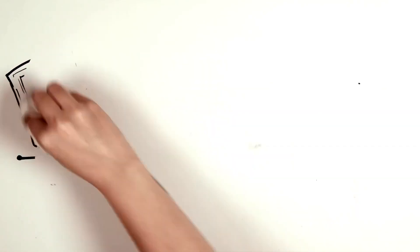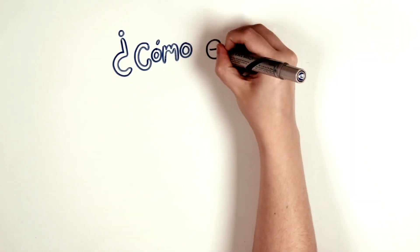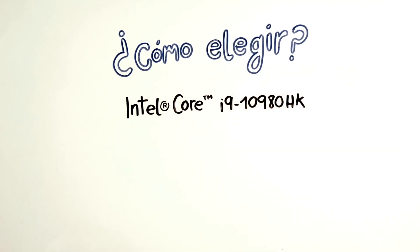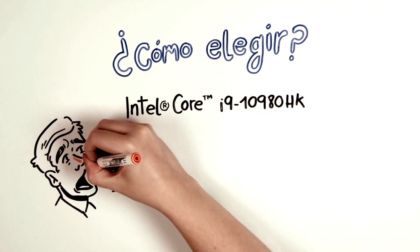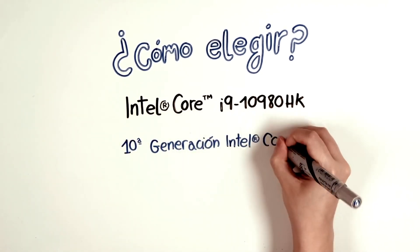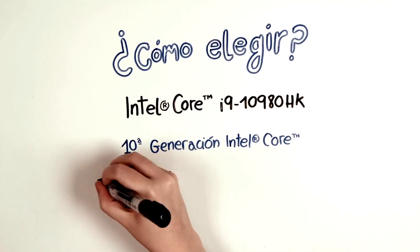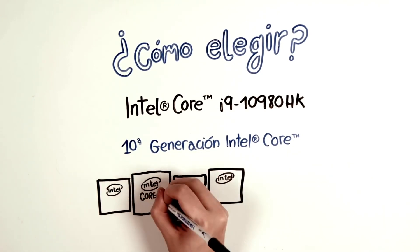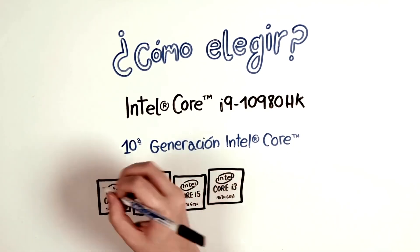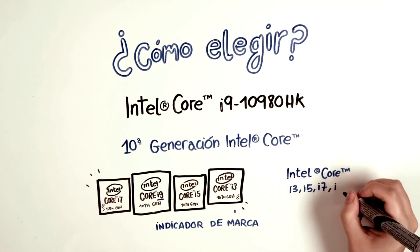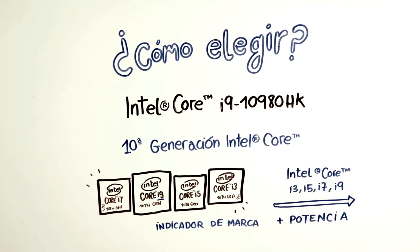Now pay attention. If you've read the specifications of a computer and its processor, you might have run into one of those incomprehensible codes. Don't worry, because it has an easy translation. Currently, we're in the 10th generation of Intel Core processors, and its family consists of four types: the Core i3, the Core i5, the Core i7, and the Core i9. Each one refers to its processing power, from lowest to highest, one or the other being optimal depending on the use you are going to give your computer.